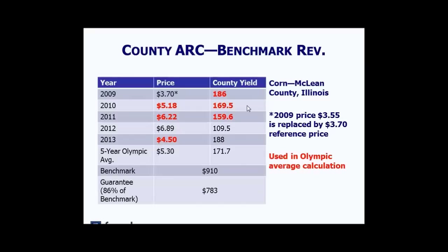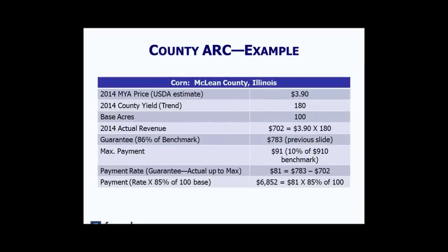Here's a quick example of County ARC using corn in McLean County, Illinois. Prices from 2009 to 2013 are used. The 2009 price of $3.55 is replaced by the $3.70 reference price, but still drops out as the lowest in the Olympic average. The five-year Olympic average price comes to $5.30 and the five-year average county yield is 171.7 bushels per acre. That calculates to a benchmark of $910 per acre, and at 86%, the guarantee is $783.